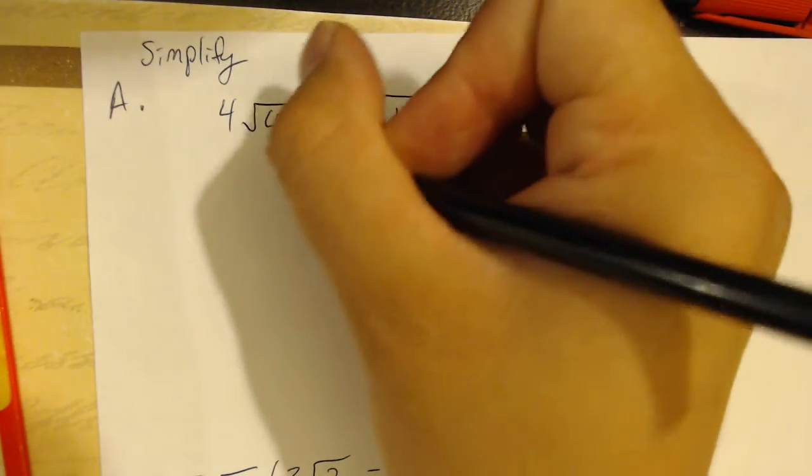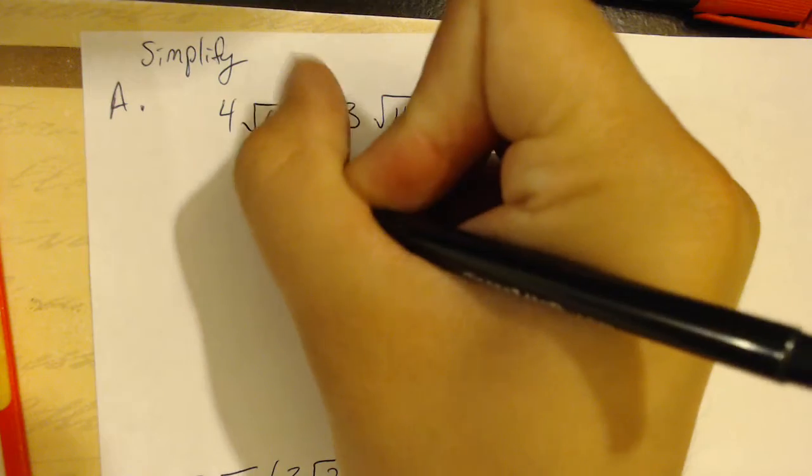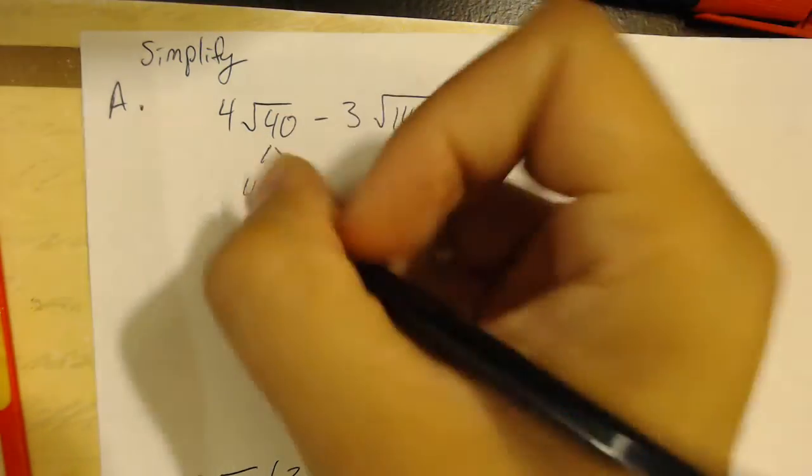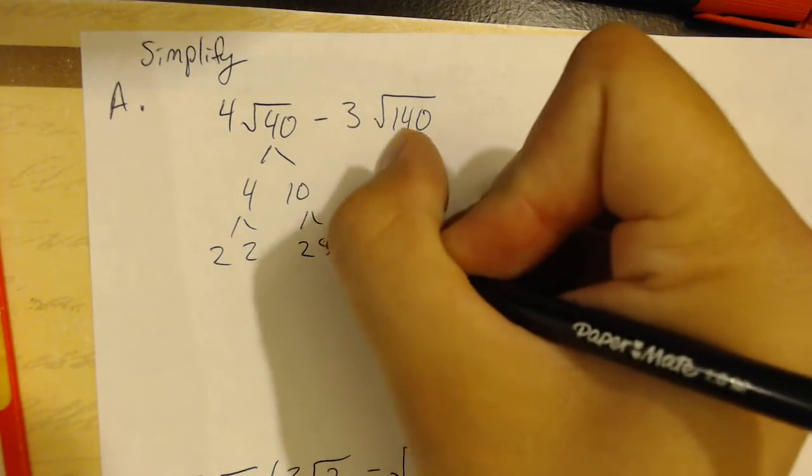What we're going to do is, we're going to take the square root of 40, and we're going to start factoring that. That can be factored in 4 times 10. 4 can be factored in 2 times 2. 10 can be factored in 2 times 5.